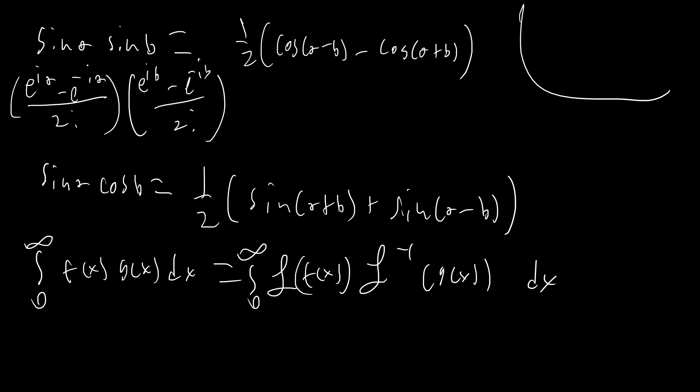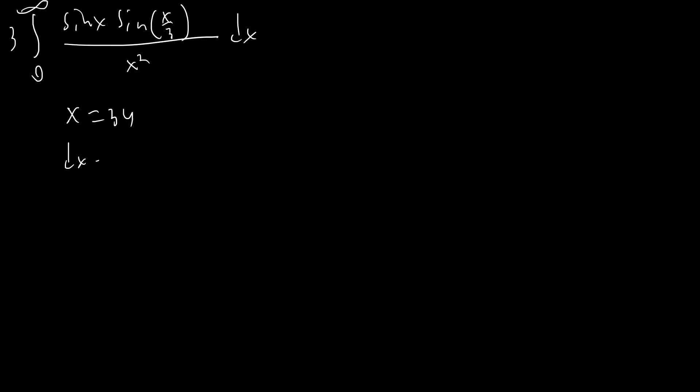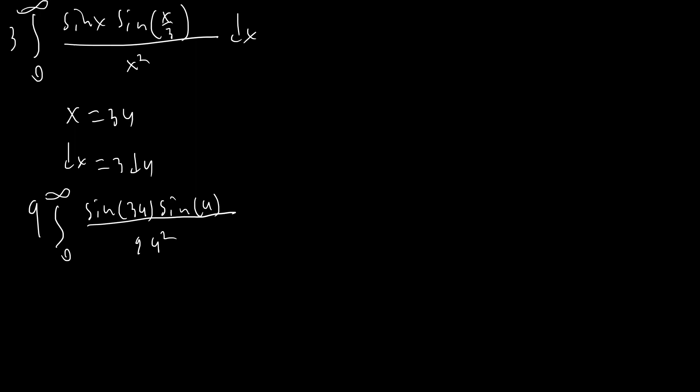Let's start evaluating these integrals. The first one is the integral from zero to infinity of sin(x)·sin(x/3) over x²/3 dx. We bring the 3 to the top and substitute x = 3u, so dx = 3 du. We end up with 9 du times the integral of sin(3u)·sin(u) over 9u², and the 9's cancel, leaving the simplified integral.